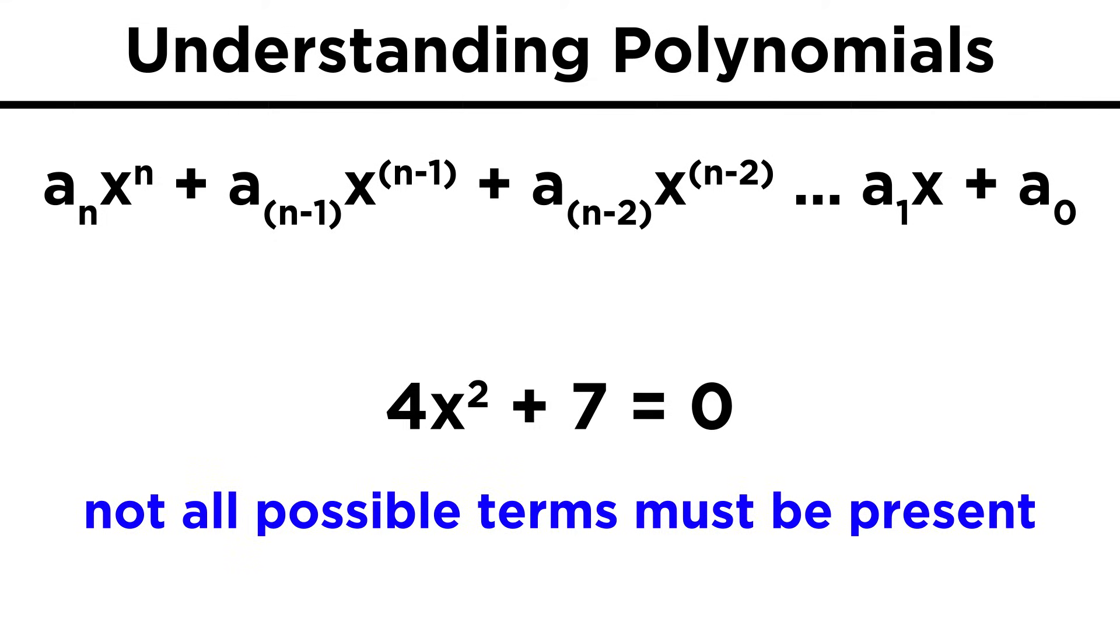Also, polynomials don't have to have all the possible terms. Four x squared plus seven is a polynomial even without a term for x raised to the first power. We can just think of it as zero x, which we simply omit.